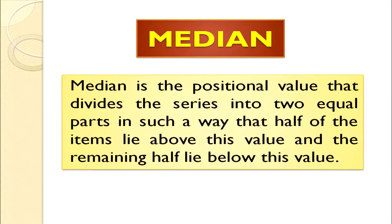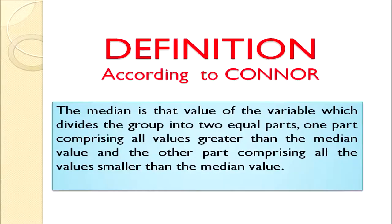So students, we have learned how to compute weighted mean. After this we can discuss median. Median is the positional value that divides the series into two equal parts — half of the items lie above this value and the remaining half lie below this value. According to one author, the median is that value of the variable which divides the group into two equal parts: one comprising all values greater than the median value, and the other comprising all values smaller than the median value.